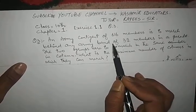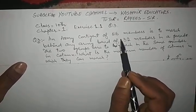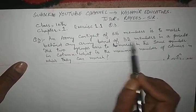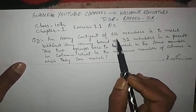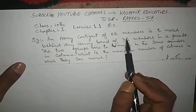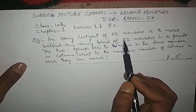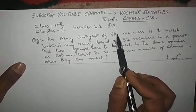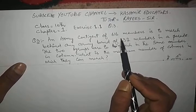In this question, we need to find the number of columns such that the number of columns is equal between the two rows. To solve this, we find the highest common factor (HCF) between the two numbers.